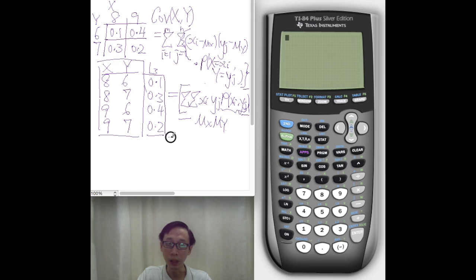So, in calculator, all we need to do is just call out sum XY, minus, and we understand now, right, because your calculator looks at mu X as X bar,